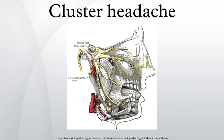Cluster headache has been historically classified as a vascular headache. For decades, it has been proposed that intense pain was caused by dilation of blood vessels, which was thought to create pressure on the trigeminal nerve. While this theory was thought to be the immediate cause of the pain, the etiology is not fully understood and CH pathogenesis is the subject of ongoing debate. Investigations into the vascular theory of headache disorders are helping to identify the role of other possible causative mechanisms in CH.